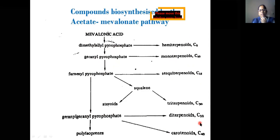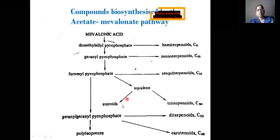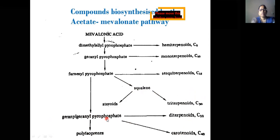Geranyl pyrophosphate (C10) in the presence of IPP gives farnesyl pyrophosphate, which contains 15 carbon atoms. Farnesyl pyrophosphate further gives geranylgeranyl pyrophosphate containing 20 carbon atoms. On another route, farnesyl pyrophosphate gives squalene, a triterpene containing 30 carbon atoms, which leads to steroids. From geranyl pyrophosphate, polyisoprenes are also obtained. Two molecules of geranylgeranyl pyrophosphate give carotenoids containing 40 carbon atoms.